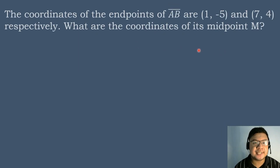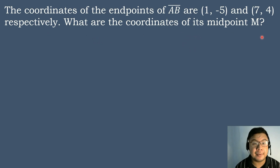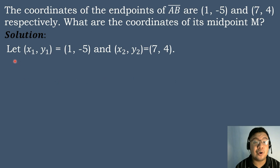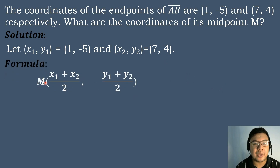Let's proceed with our second example. The coordinates of the endpoints of segment AB are the ordered pair (1, negative 5) and (7, 4), respectively. What are the coordinates of its midpoint M? So the first step will be to let the ordered pair (x sub 1, y sub 1) equal to the ordered pair (1, negative 5), and the ordered pair (x sub 2, y sub 2) equal to the ordered pair (7, 4). Then after that, we will use the midpoint formula, in which the midpoint equals x sub 1 plus x sub 2 divided by 2 to get the x value, and y sub 1 plus y sub 2 divided by 2 to get the y value.